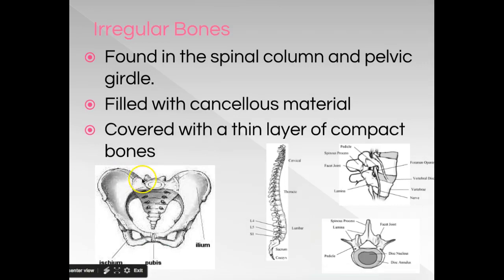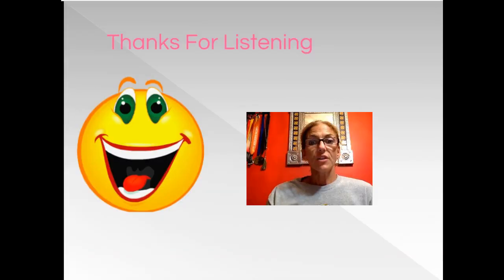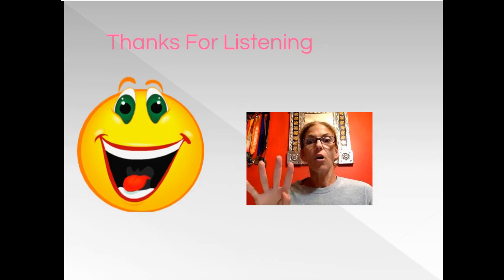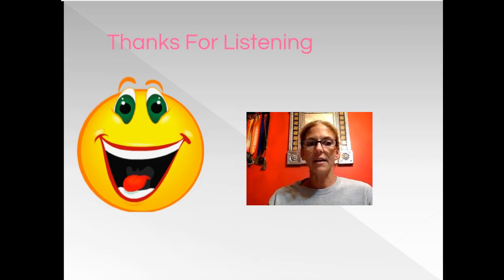Irregular bones are found in the pelvis and in the vertebral column — here are some individual vertebrae. Irregular bones are similar to short bones in that they're filled with cancellous material and have a thin layer of compact bone on the outside; the difference is they just don't have a regular shape. To summarize: we talked about two types of bone tissue, their composition, where they're found, and their microscopic anatomy, as well as four types of whole bones — where they're found and how they're composed of those two tissue types.